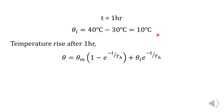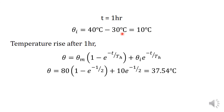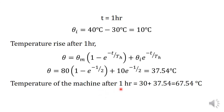Using the general heating equation with theta_m equals 80 degrees Celsius, t equals 1 hour, th equals 2 hours, and theta_i equals 10 degrees Celsius, we calculate the temperature rise theta as 37.54 degrees Celsius after 1 hour. To find the actual temperature of the machine, we add the ambient temperature: 30 plus 37.54 equals 67.54 degrees Celsius. That is the final answer.